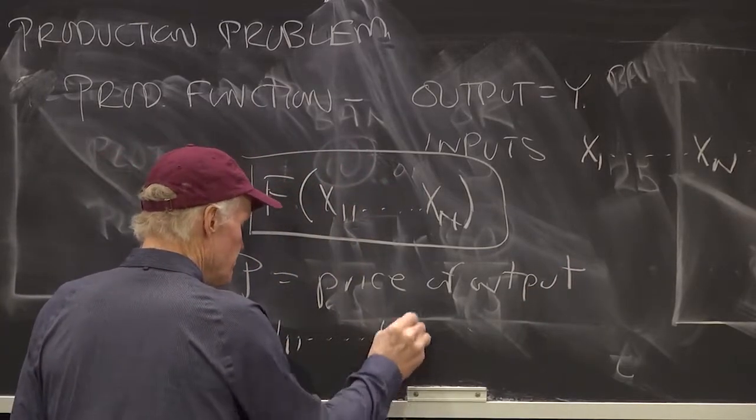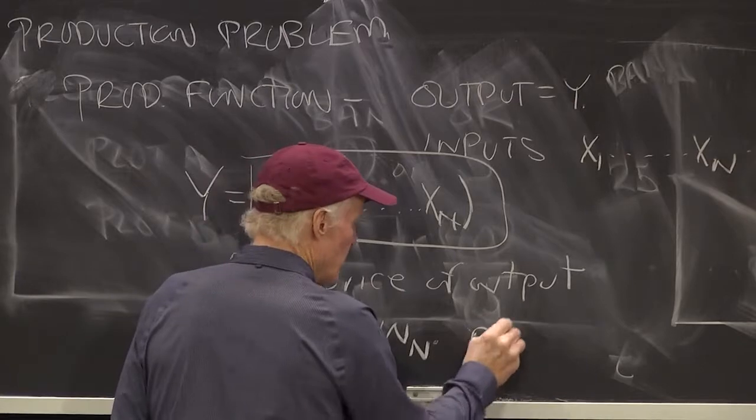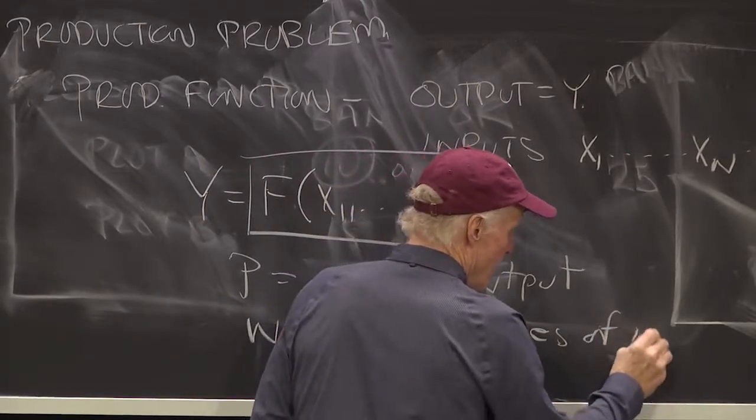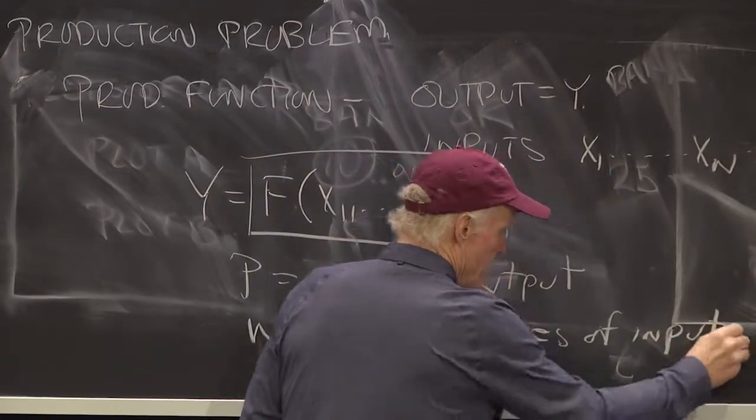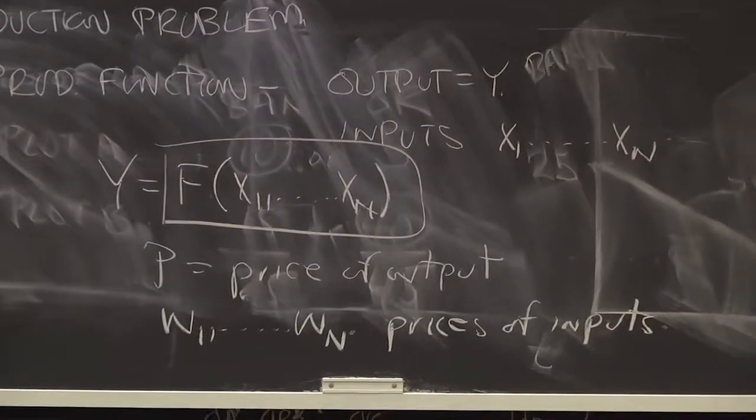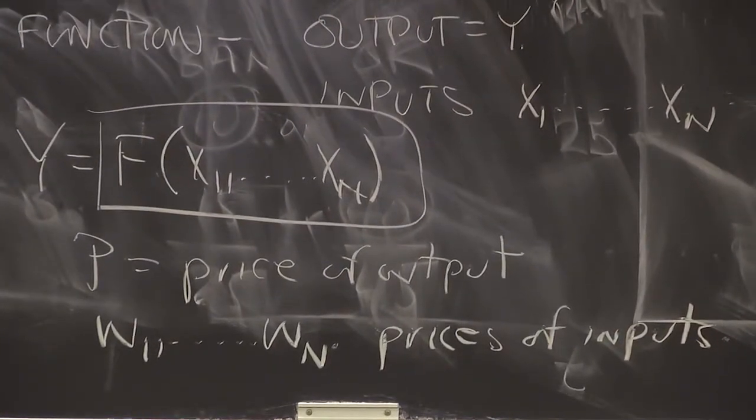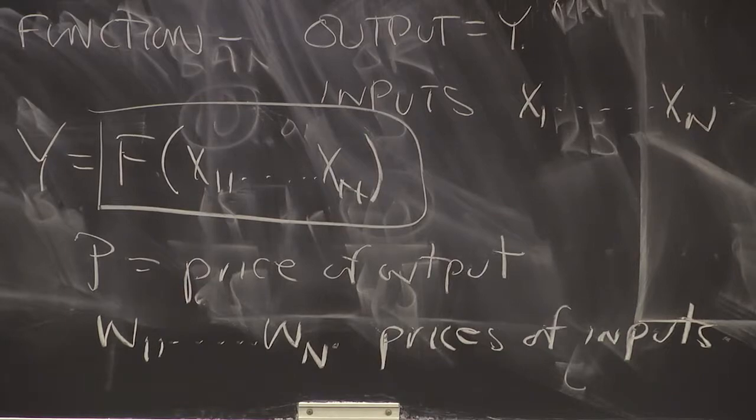W1 up to WN are the prices of the inputs. I think W is standing for like the wage of the inputs. It's the price of the inputs.